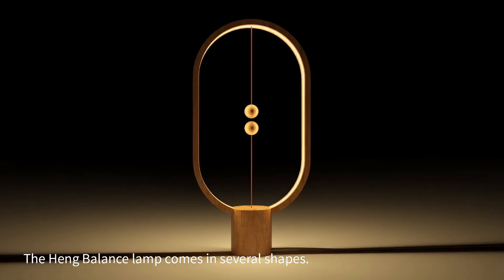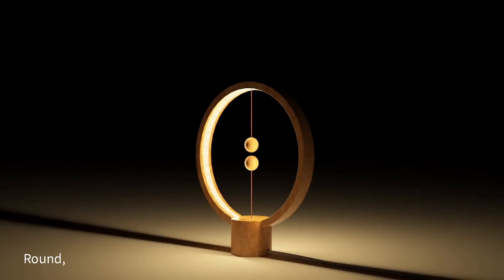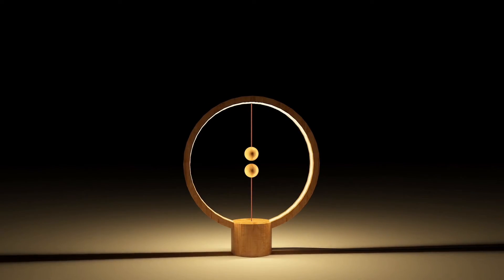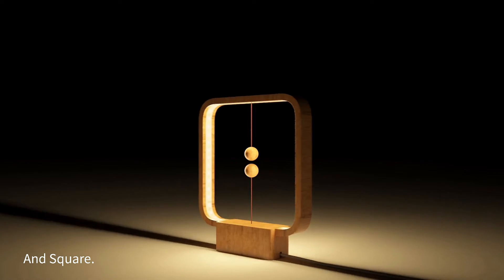The Heng balance lamp comes in several shapes, such as the ellipse shape, the round shape, and even a square shape.